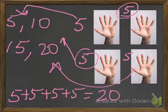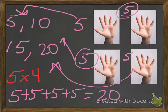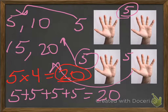A faster, easier way to do that is to say: I've got five times four hands. I've got five fingers on each hand and I've got four hands. That's going to get us the same answer — twenty. Remember, twenty is our product — that's our answer. The five and the four are our factors.